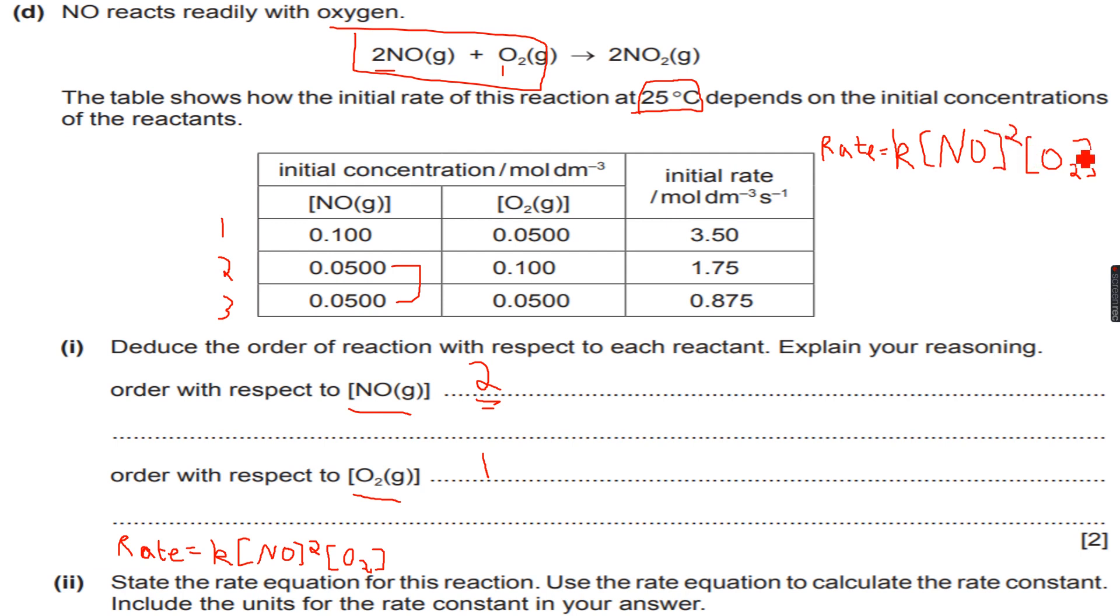This is squared and this is to the power of 1. So now k is equal to rate over NO squared times O2. So we know this.